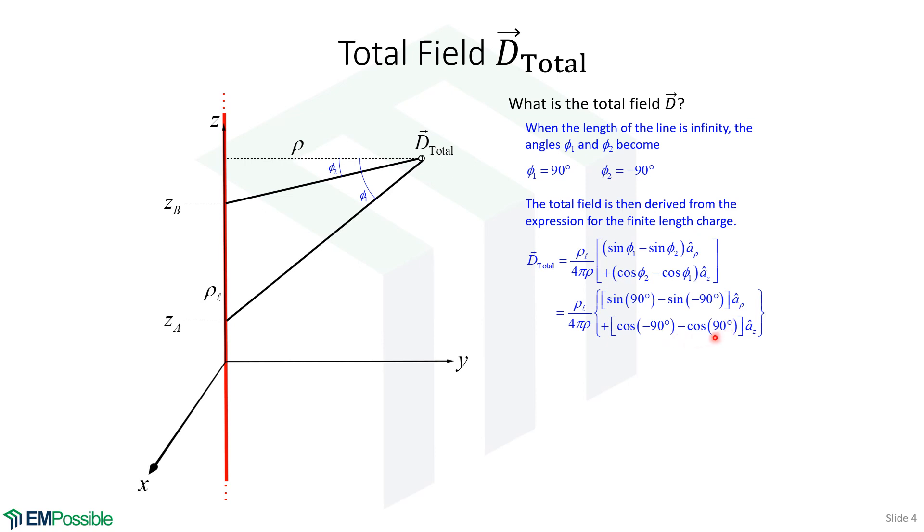Cosine of minus 90 degrees is 0. Minus cosine of 90 degrees, another 0. So we plug in these numbers, and we get an expression for the total electric flux, which is just charge density over 2 pi rho.